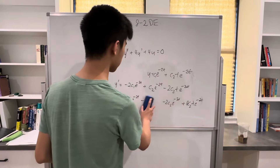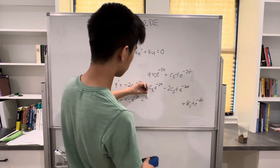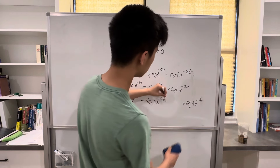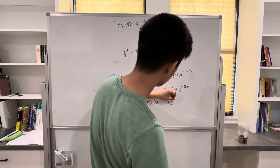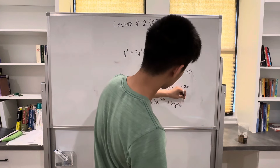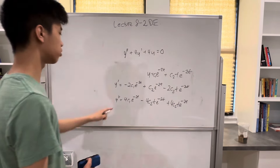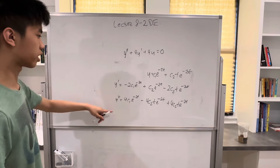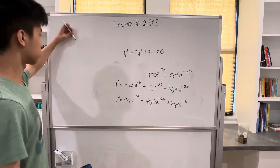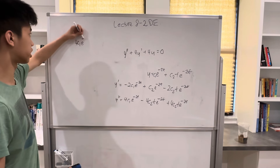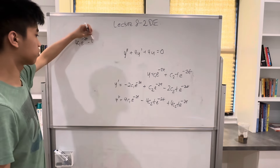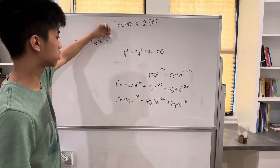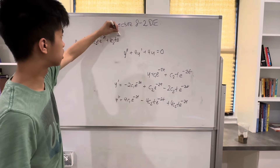Let me simplify. The y'' expression becomes 4c₁e^(-2t) - 4c₂e^(-2t) + 4c₂te^(-2t). Now if we plug this in, starting with y'': 4c₁e^(-2t) - 4c₂te^(-2t) + 4c₂te^(-2t).